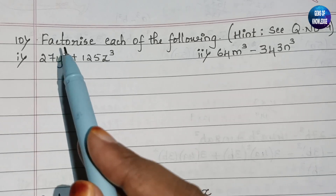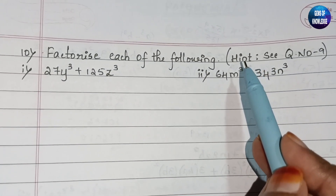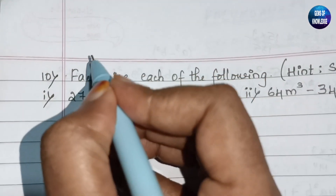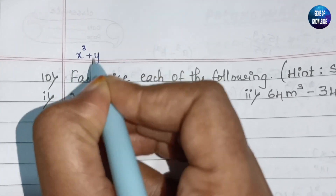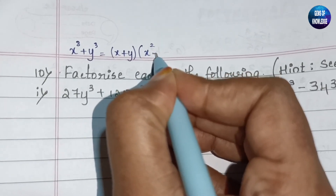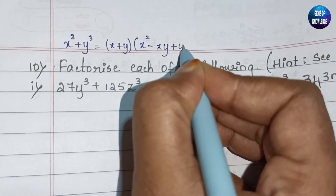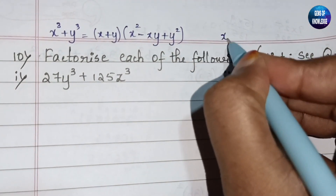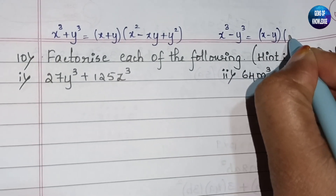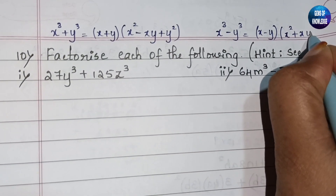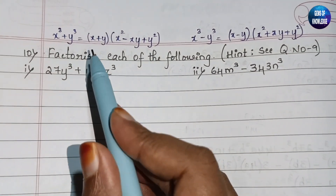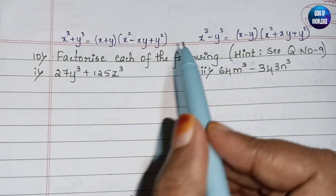Question number 10 says: factorize each of the following, with the hint referring to question number 9. From question 9 we obtained two formulas: x³ + y³ = (x+y)(x²-xy+y²), and x³ - y³ = (x-y)(x²+xy+y²). Using these formulas we will now solve question 10.